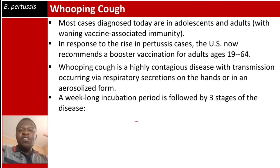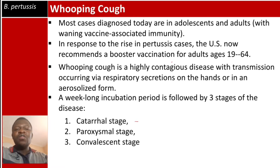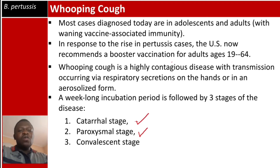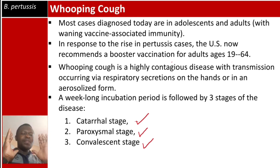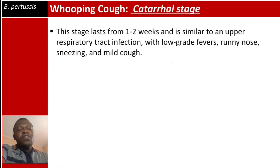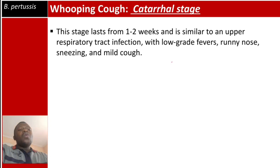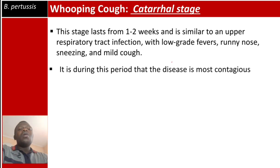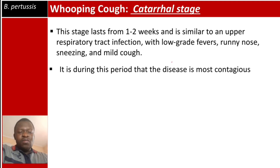After incubation, the disease progresses through three stages: the catarrhal stage, the paroxysmal stage, and the convalescent stage. The catarrhal stage lasts one to two weeks and resembles an upper respiratory tract infection with low-grade fever, runny nose, sneezing, and mild cough. It is during this catarrhal stage that the disease is most contagious.